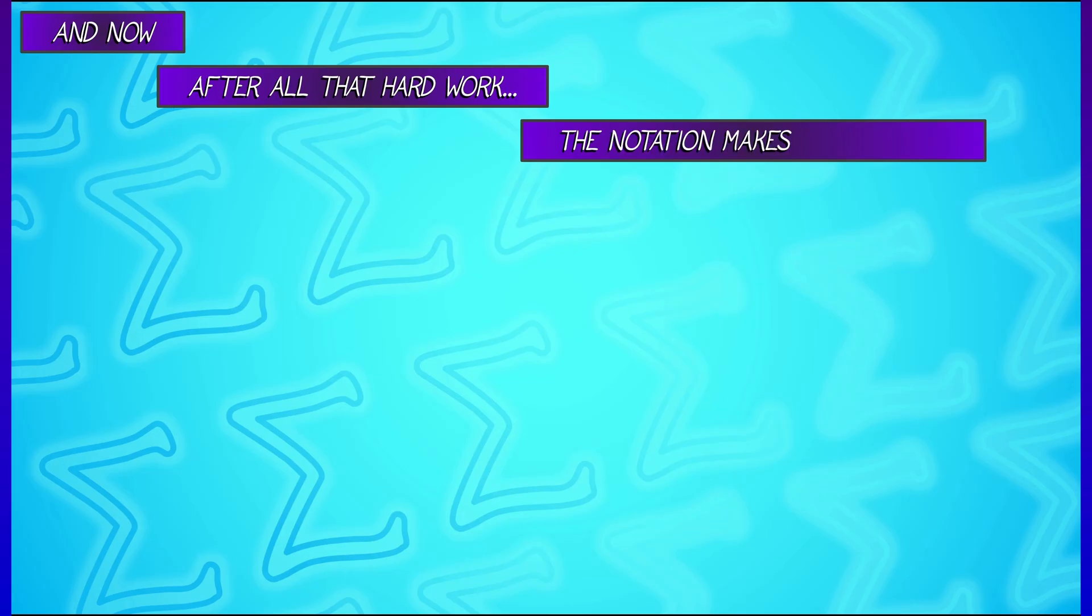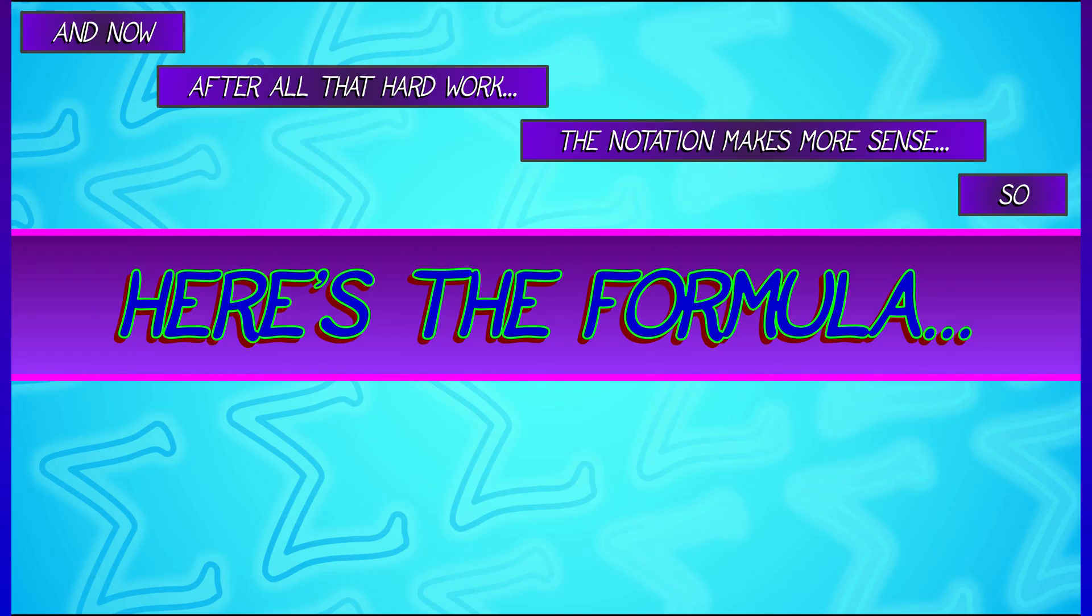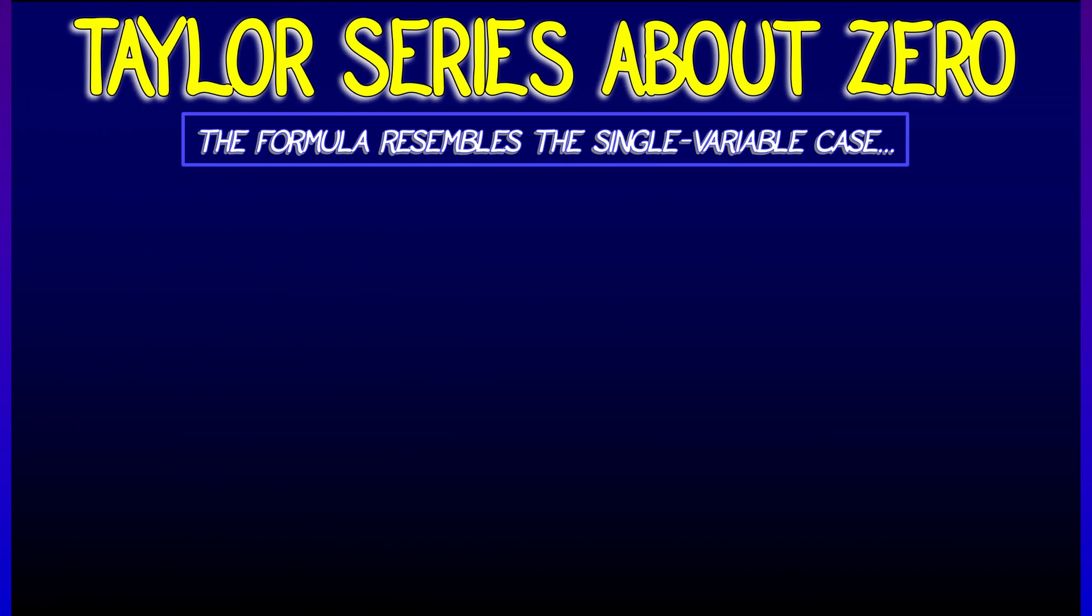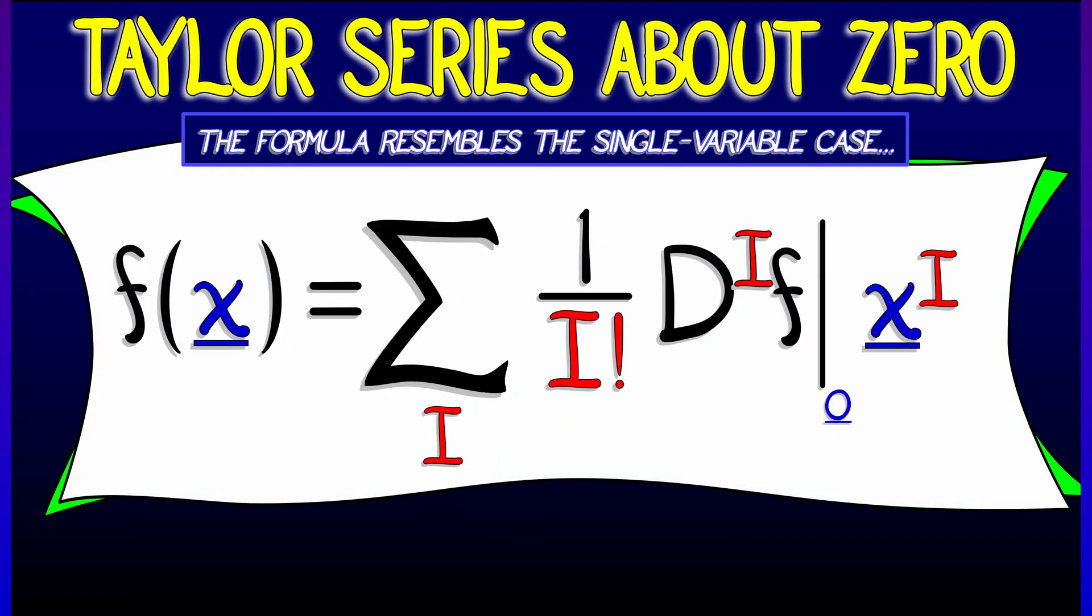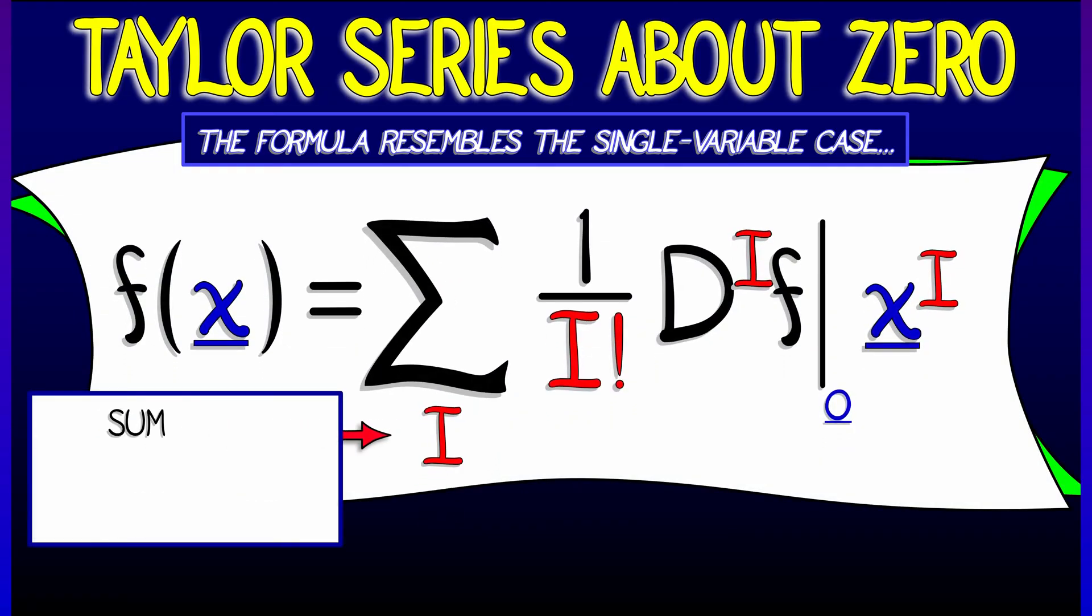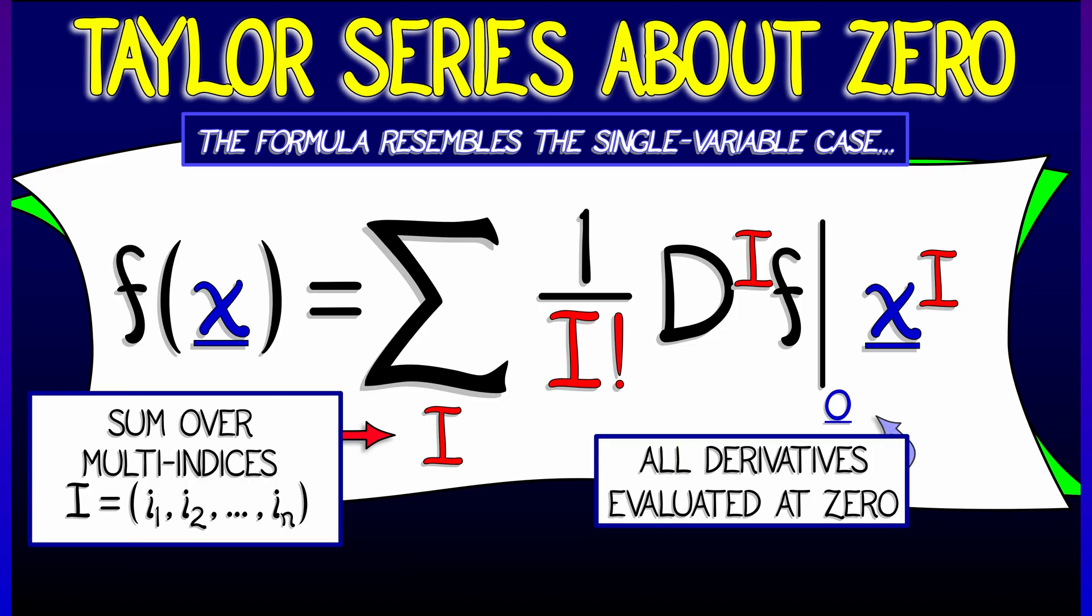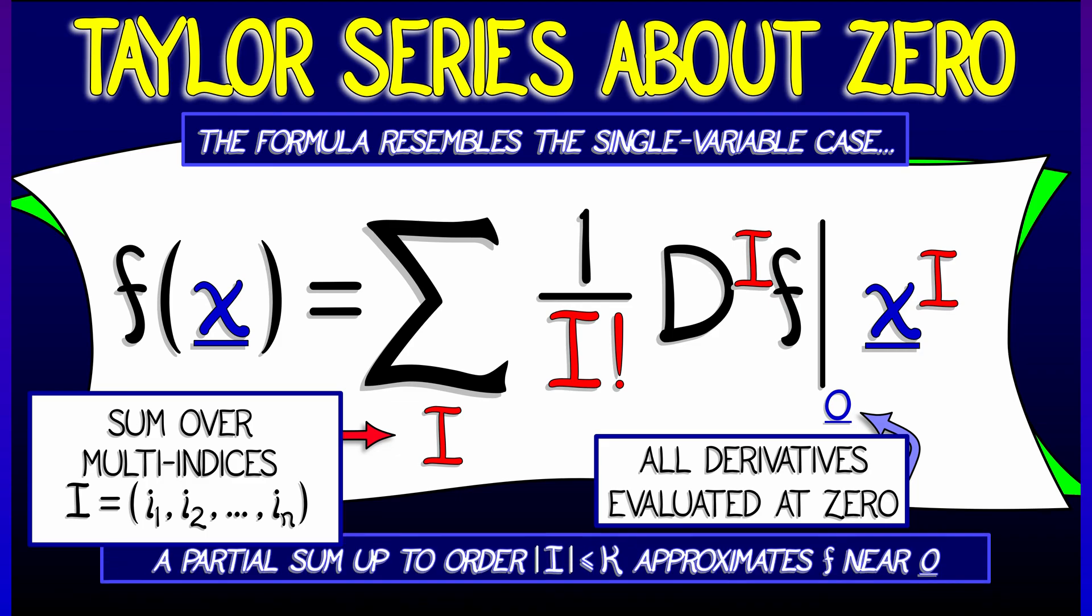And now, after all that work and notation, we finally have the Taylor series formula. In the multivariate case, if we expand about zero, it looks like the following: the sum over all multi-indices I of 1 over I factorial times the I-th derivative of f evaluated at zero times the monomial term x to the I.